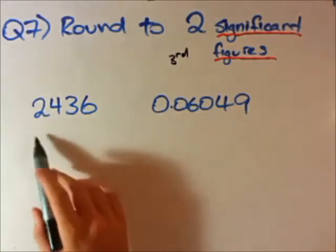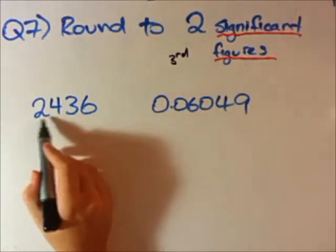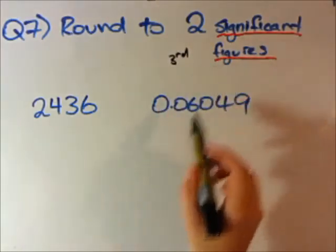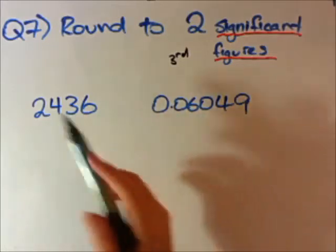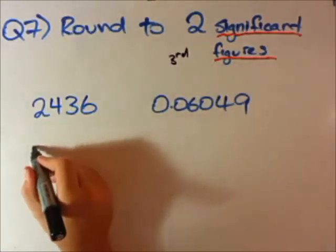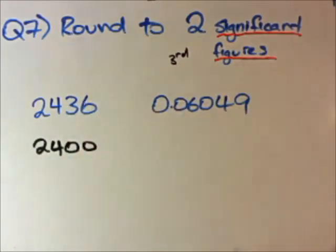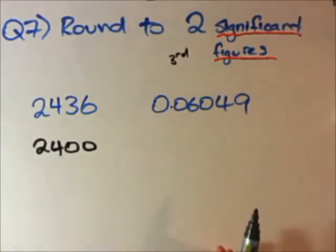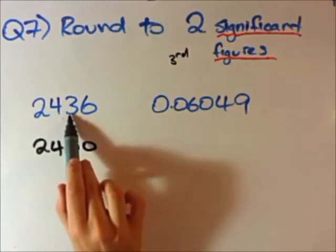Rounding to a certain number of significant figures means we want to approximate the number. Two significant figures means the first two numbers you actually see. You do have to use those rounding techniques — you have to look at the number after. So if there were 2,436 people at the cricket, the first two numbers are 2 and 4. You look at the third number, which is 3. If the next number is between 0 and 4 you round down or stay the same; if it's between 5 and 9 you round up. So the answer is 2,400.